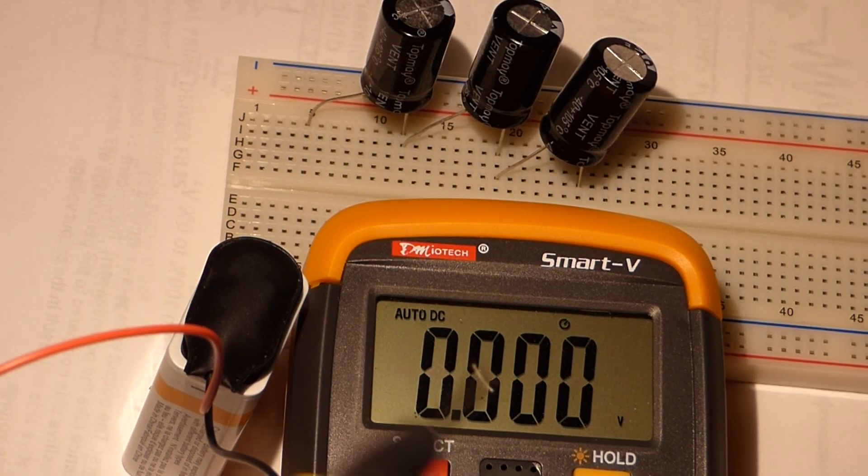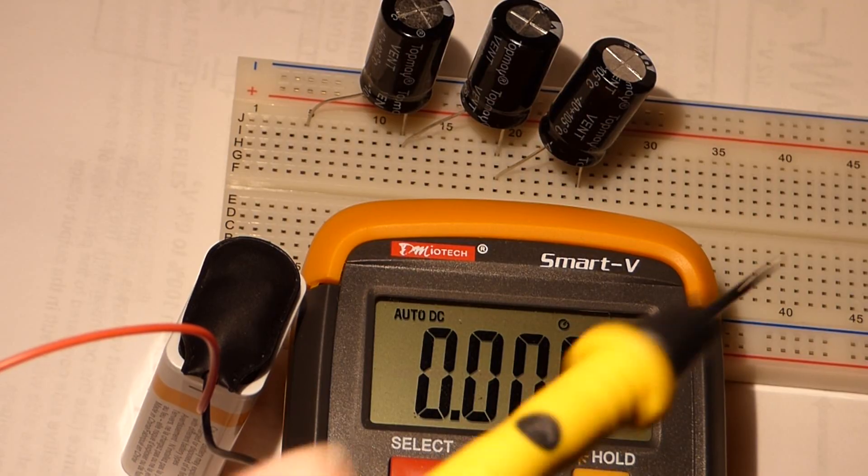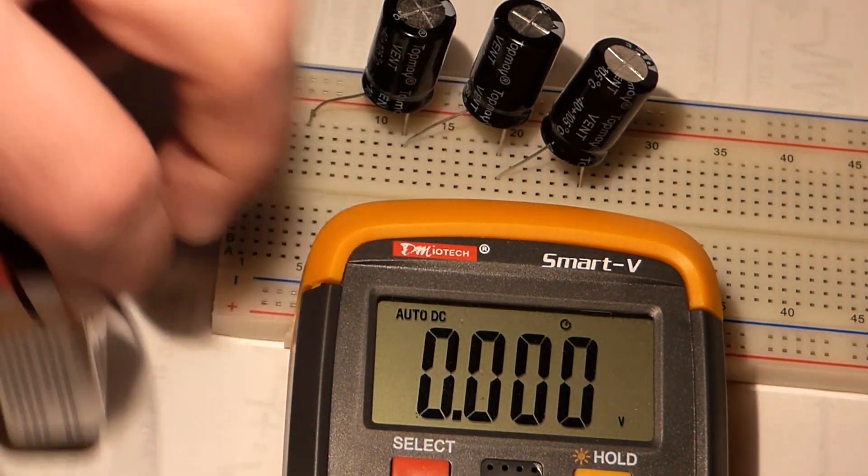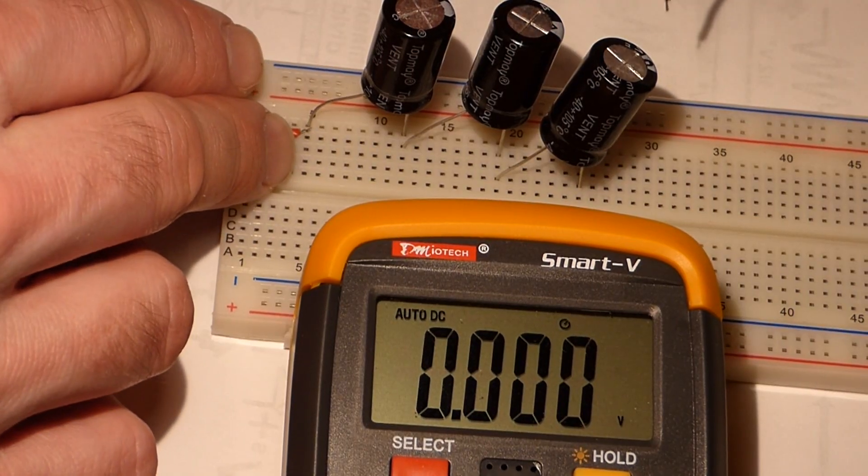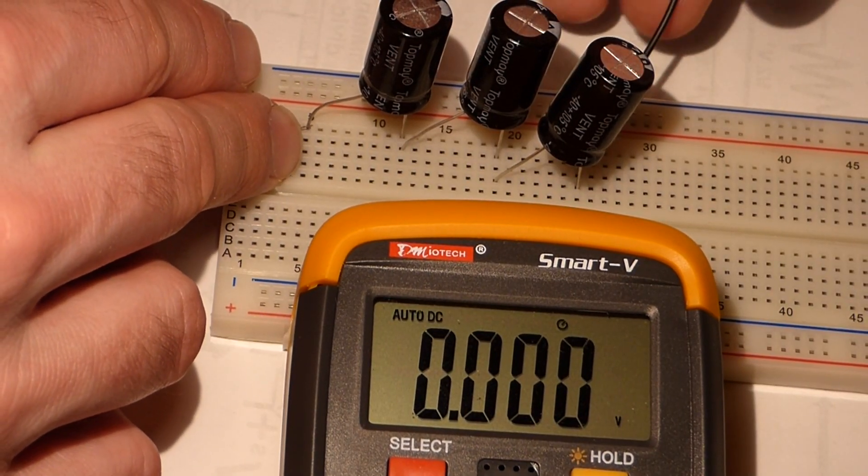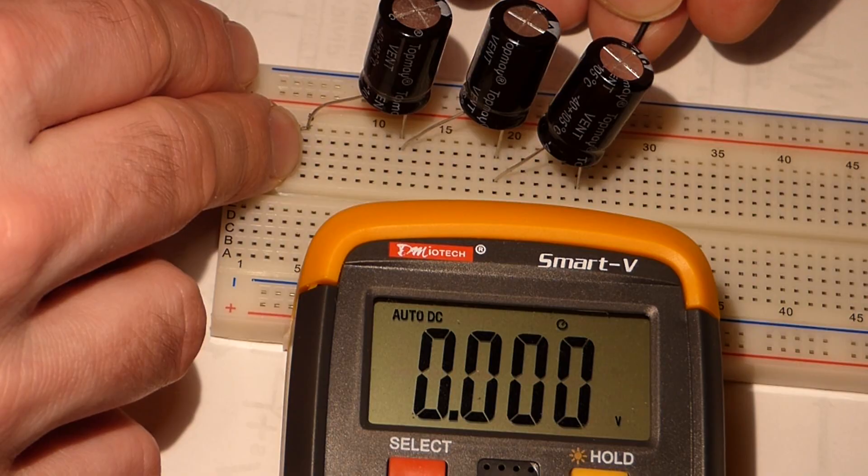So now we're going to measure voltage. I have the multimeter set to measure voltage. To begin with, we're going to take the 9 volt battery and give the three capacitors in series a 9 volt charge.